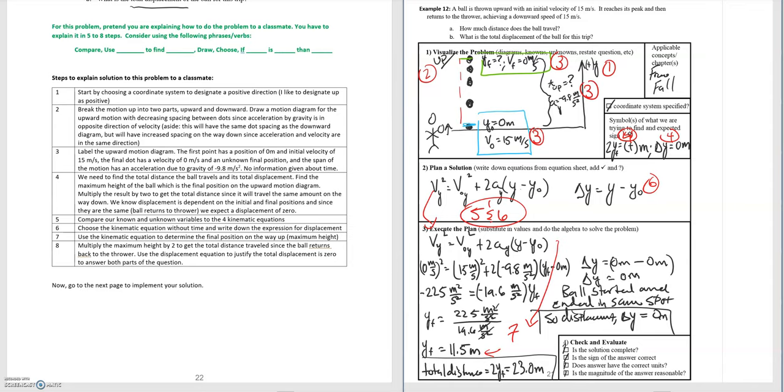For step 8, we multiply the maximum height by two to get the total distance traveled since the ball returns back to the thrower. Remember yf is just the distance to the top. It still needs to come back down to be included for the total distance. This is step 8, this boxed part here where we multiply that maximum height by two to get 23 meters. Then we take our displacement equation where we have a final position of zero meters minus an initial position of zero meters, giving us a total displacement of zero meters. We have a little explanation here about why that is. This is step 8, answering the two parts of the question that we were asked.